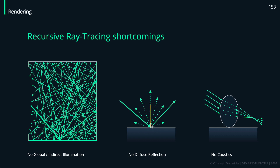To get diffuse reflections we would need to send out many more rays, which would increase render times even further. We also can't calculate caustics — the refraction of light you see in swimming pools, where light breaks at different angles and accumulates at certain spots. It's not essential for most renders, but it's also something recursive ray tracing can't handle without shooting many more refraction rays.